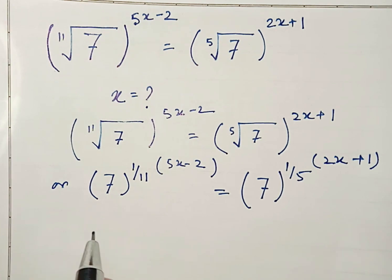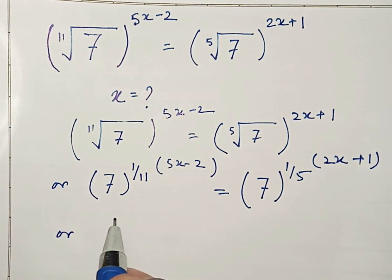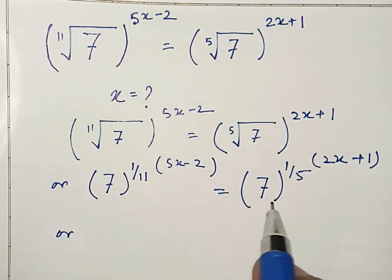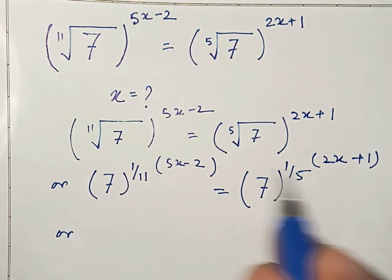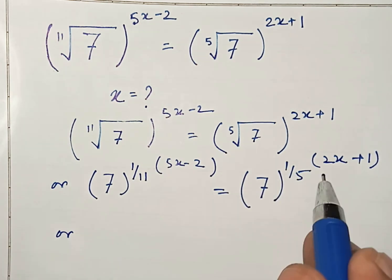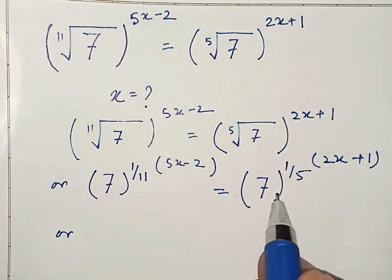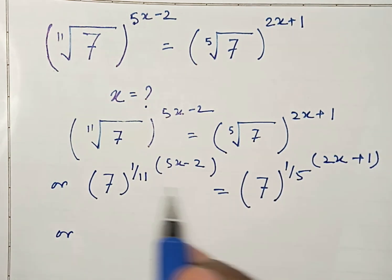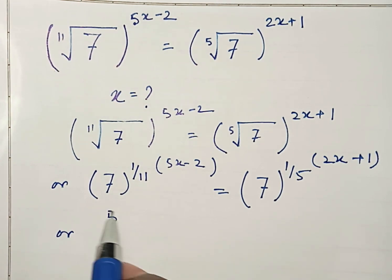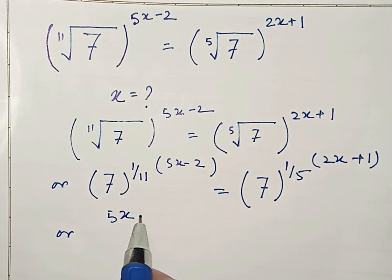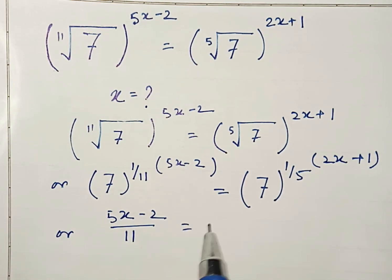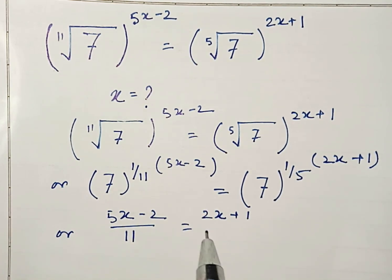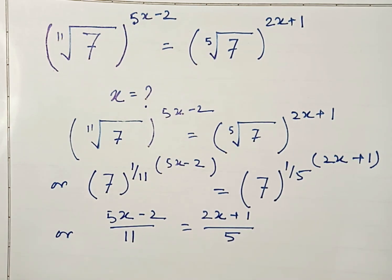Now from this equation, here it is 7 and here it is 7 — both are the same base raised to a power. So 7 will be cancelled, and we get 5x minus 2 by 11 equals 2x plus 1 by 5. Both sides are equal.